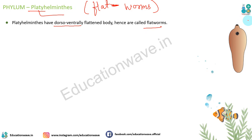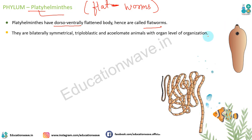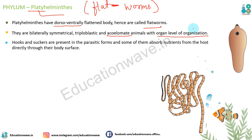Ye bilateral symmetrical hote hain. Ye triploblastic hote hain matlab inke andar ectoderm, mesoderm, aur endoderm teeno present hote hain. Aur ye acoelomate hote hain matlab inke andar coelom cavity absent hoti hai. Inki body organization organ level ki hoti hai.